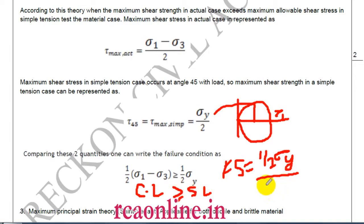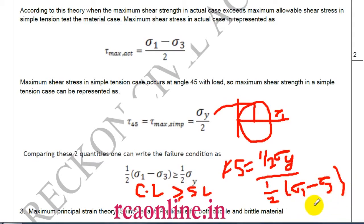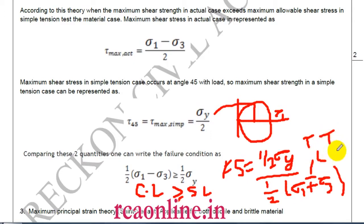The factor of safety is sigma y / 2 (from simple test) divided by (sigma one minus/plus sigma three) / 2 from complex loading. Use the minus sign when both stresses are of the same sign (tension-tension or compression-compression), and use the plus sign when they are of different signs (tension-compression or compression-tension).